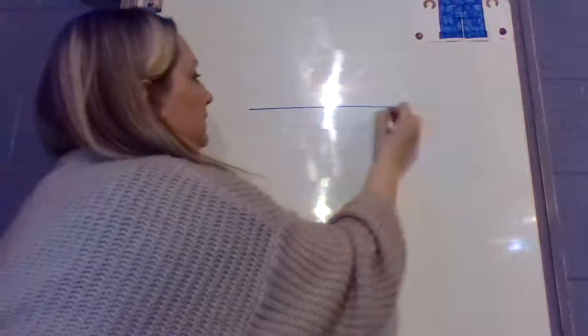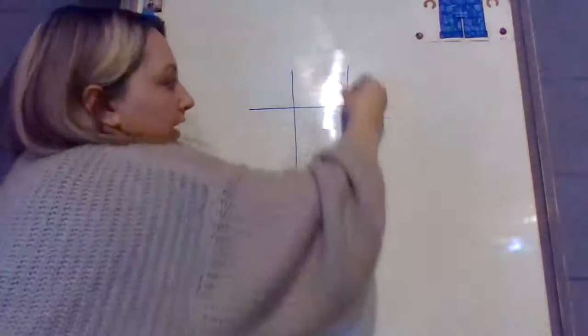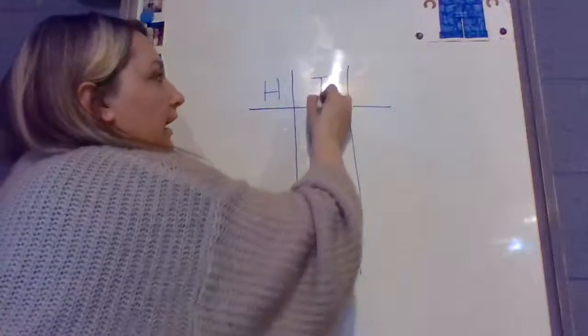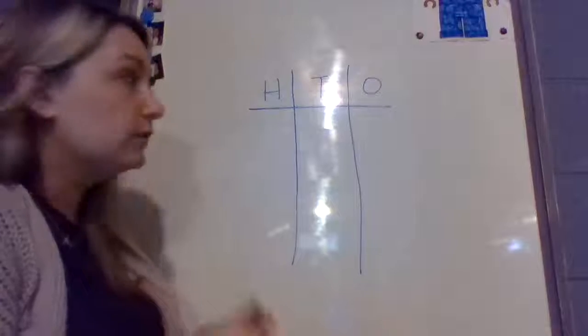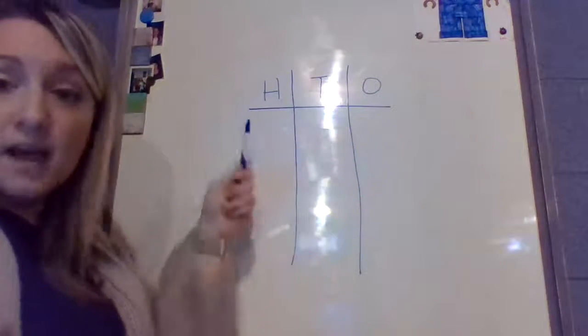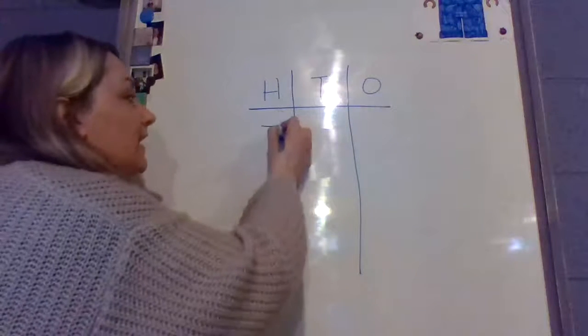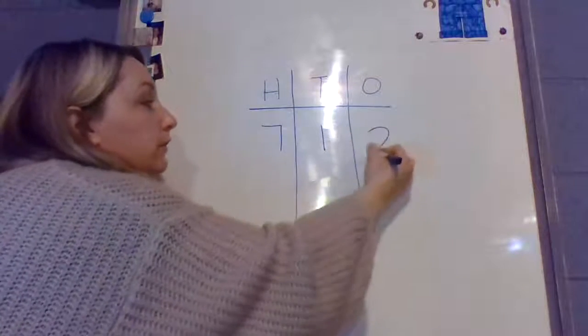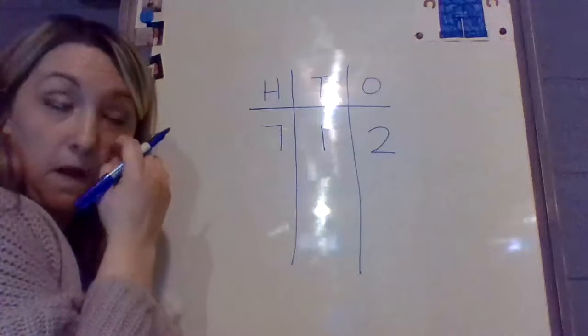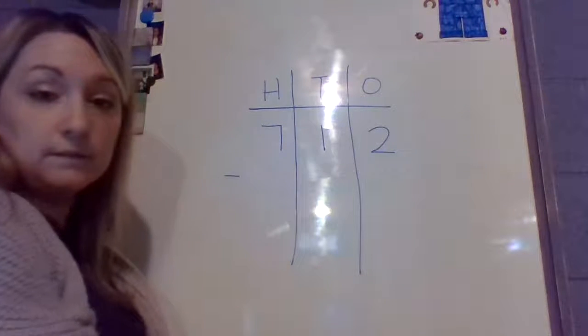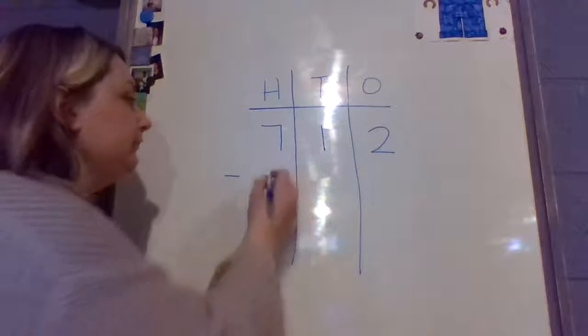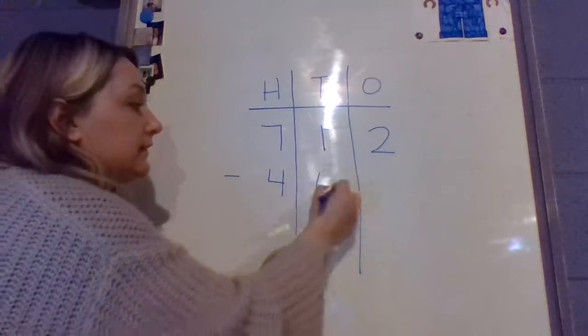Go ahead and erase, and we are going to do a subtraction problem. I'm going to start with my HTO this time. Go ahead and on your whiteboard or your paper, do your HTO so that we stay nice and organized. We've got 1's, 10's, 100's. The first number, the top number that we are going to be subtracting from is 712.